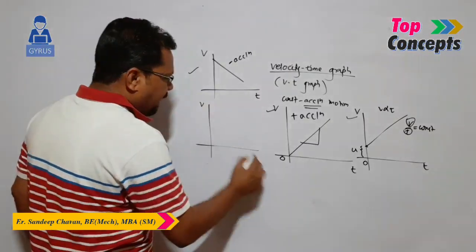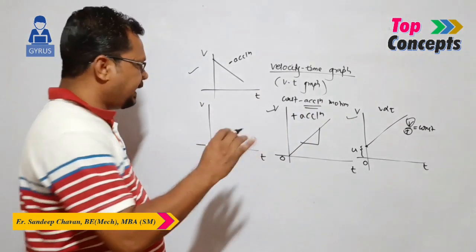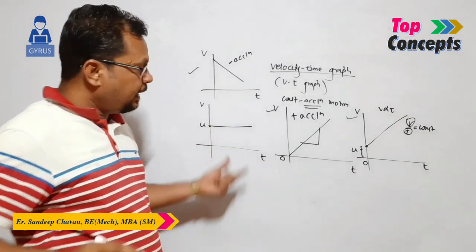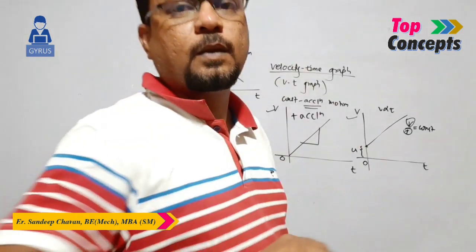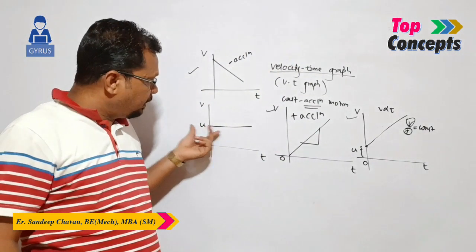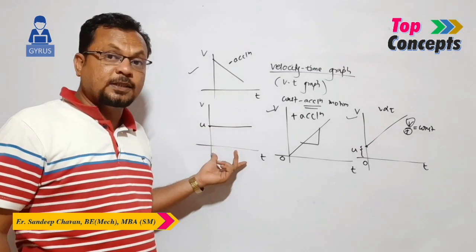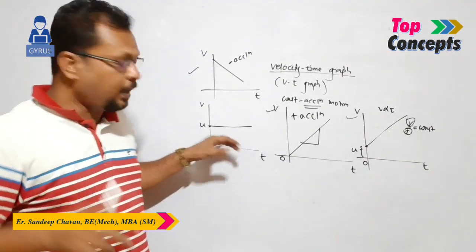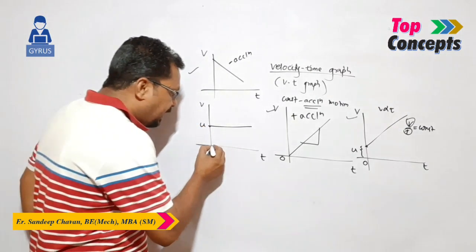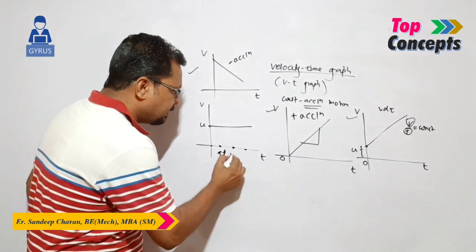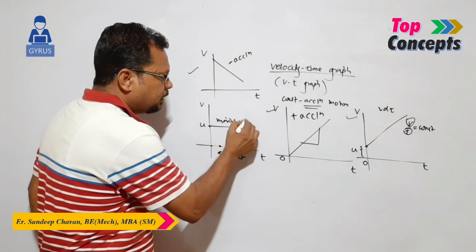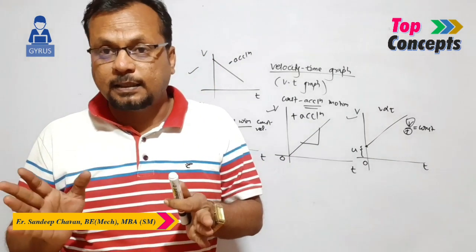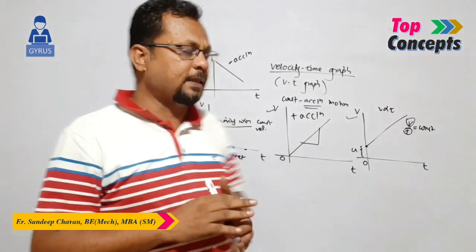Now suppose we have a velocity time graph that is a straight line parallel to the time axis — U equals something and the line runs horizontally. Here the graph is parallel to the time axis, meaning velocity is not changing with respect to time. This means it is uniform motion. A particle at rest has velocity zero, whereas this is an example of constant velocity or uniform velocity.